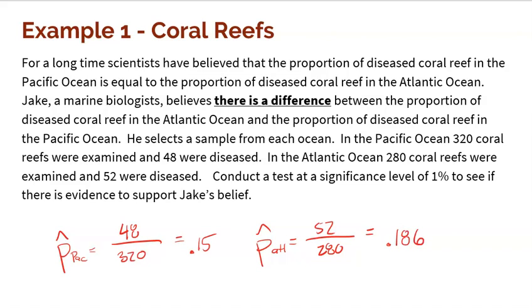So there is in fact a difference. If I do the Atlantic sample minus the Pacific sample, I get a difference of 0.036. So my first reaction is maybe Jake's right. But I've learned one thing in this class, and that is that samples vary. Just because I'm seeing a difference between two samples doesn't necessarily mean there really is a difference — it could just be sampling variability.